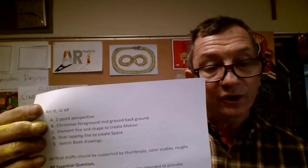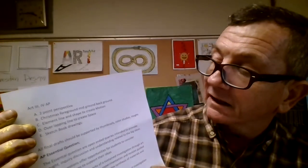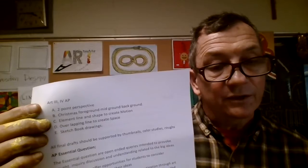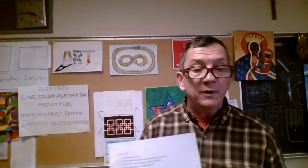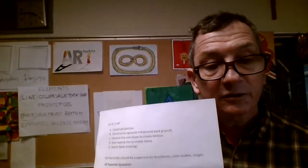We did that for Christmas — we did the nativity scene. And then after Christmas, we came back and did a line shape to create motion; I did the sun drawing in front of you. That one's supposed to be final draft. And then this week, we did overlapping line to create space, and that's right back here. So that's where you are supposed to be for final projects, my R3 and my R4. That's a typo — it's not supposed to be two-point perspective, it's supposed to be figure drawing.